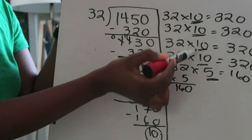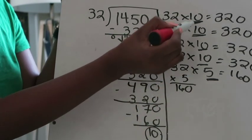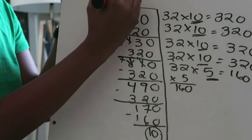And now I'm left and I know this is a remainder. There's nothing I can multiply 32 by that is going to equal 10 because 32 is too large. Now I'm going to add all those numbers that I underlined. 10, 20, 30, 40, 45 remainder 10 is my answer right now.